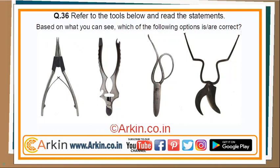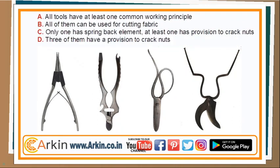Refer to the tools below and read the statements. Based on what you can see, which of the following options are correct? A: All tools have at least one common working principle. B: All of them can be used for cutting fabric. C: Only one has a spring back element; at least one has provision to crack nuts. D: Three of them have a provision to crack nuts.